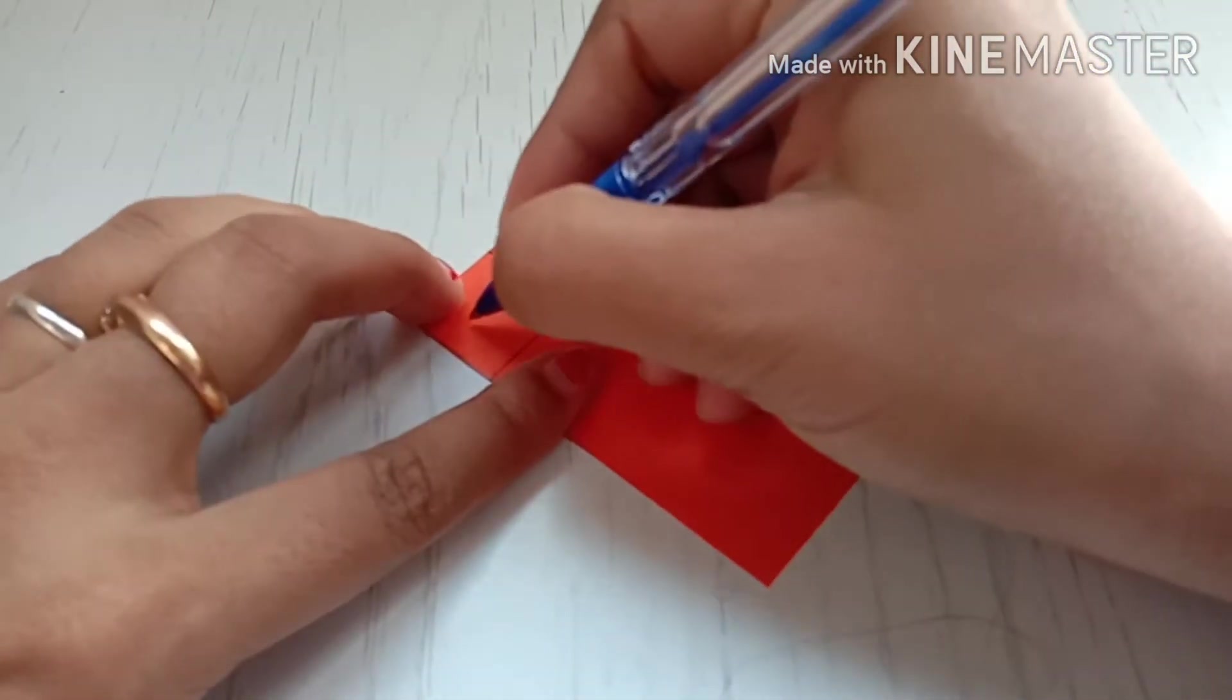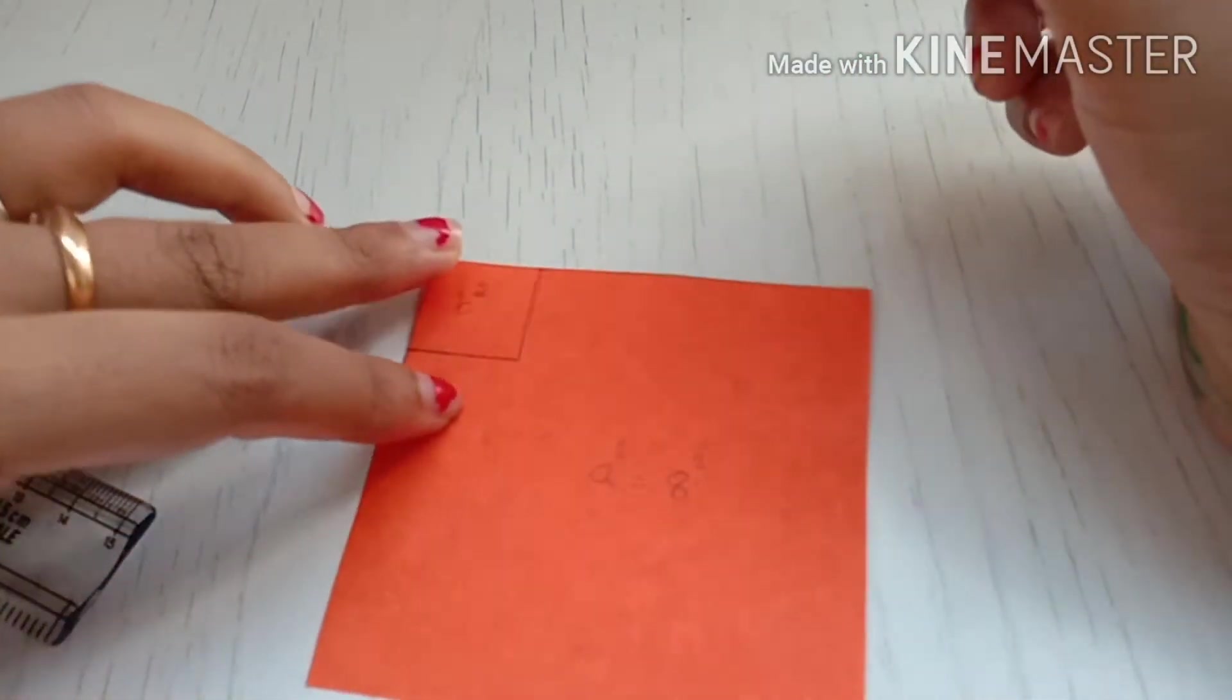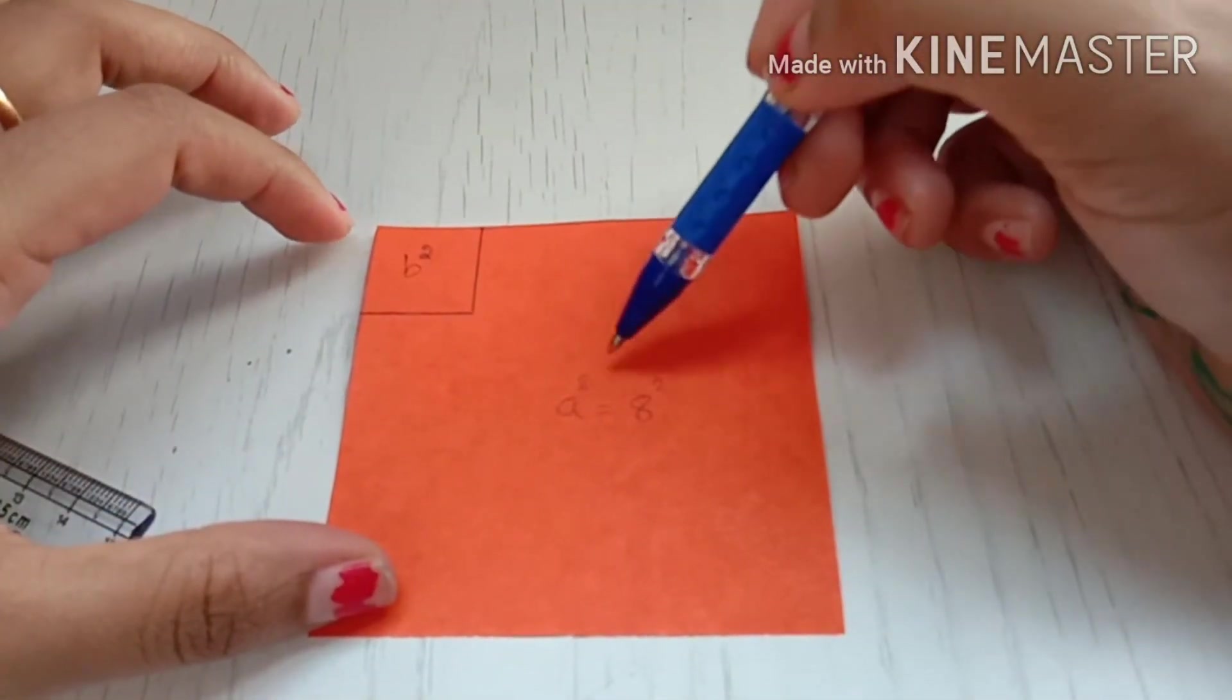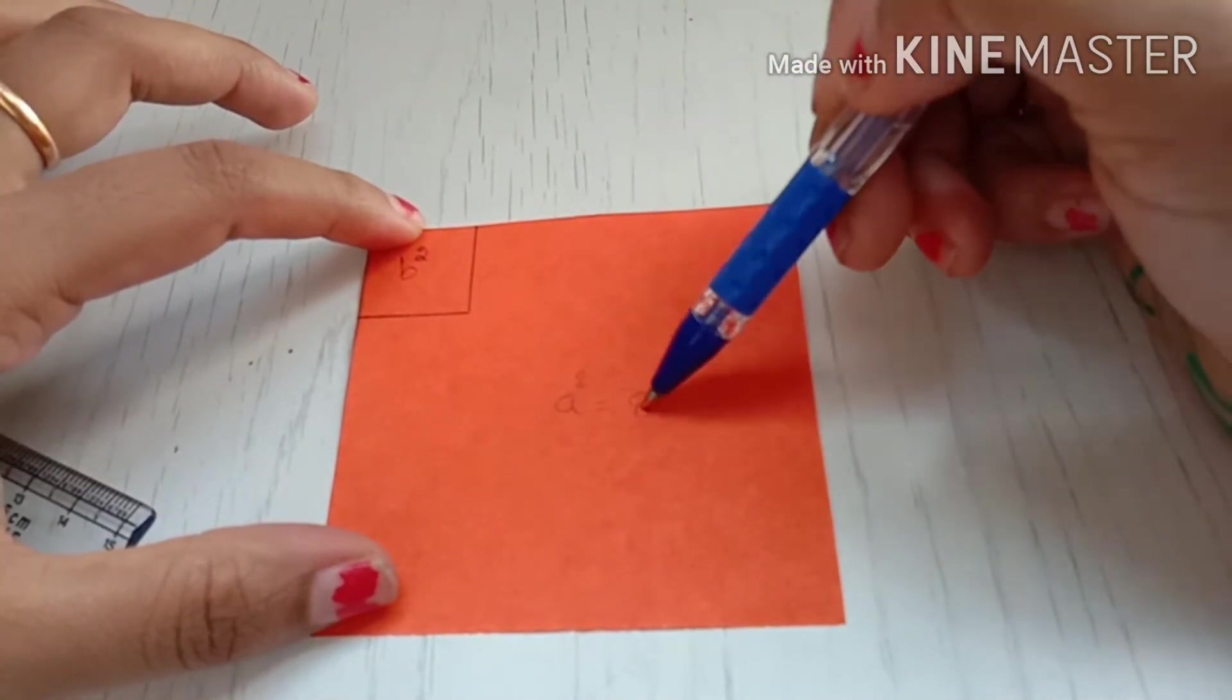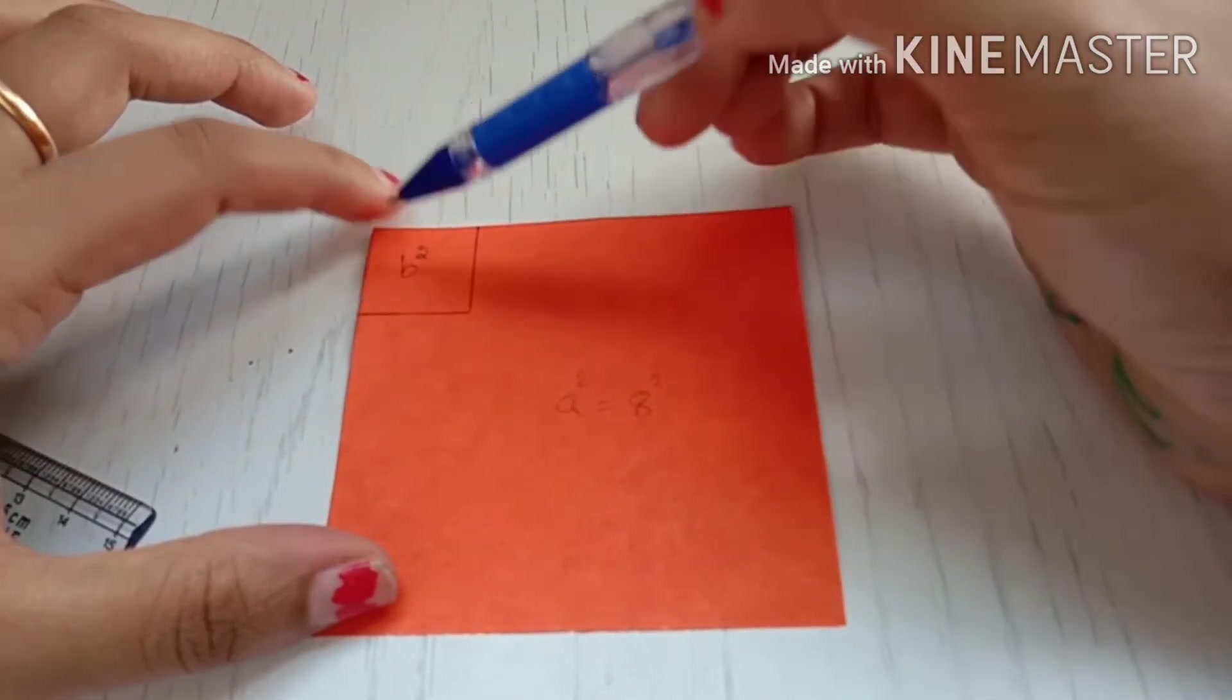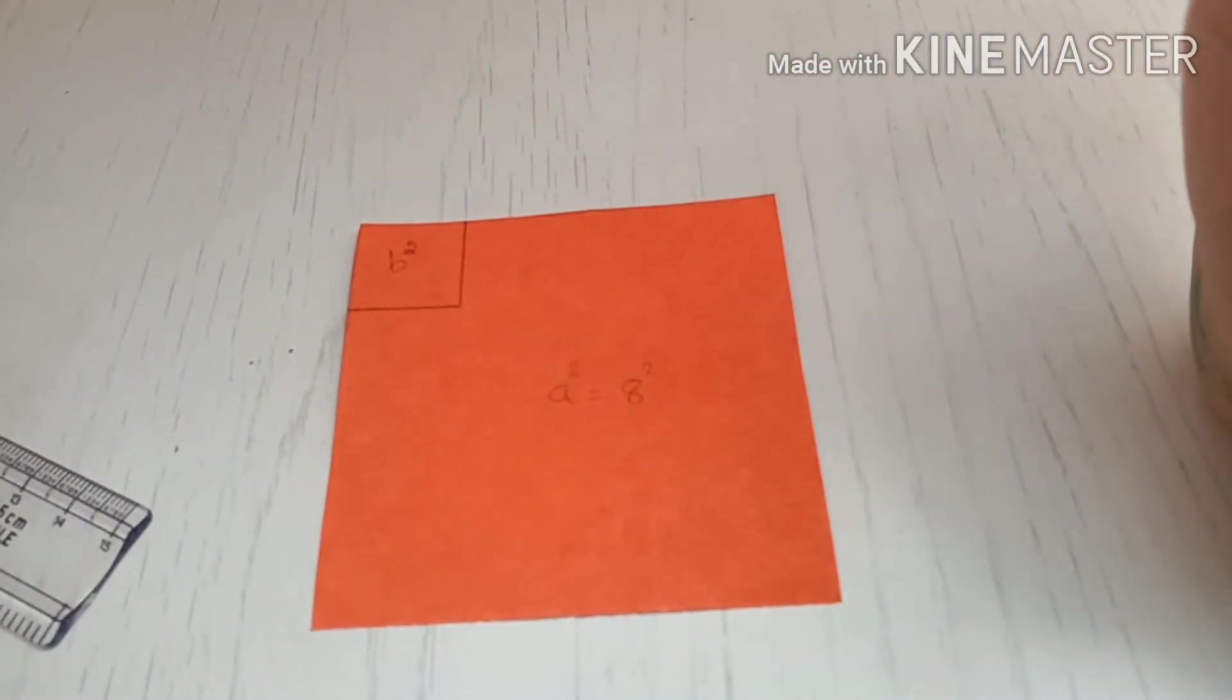Yes, this is my b square, that is 2 square. This is my a square. Since the side of the square is 8, a square is 8 square, and here it is b square. Today's identity